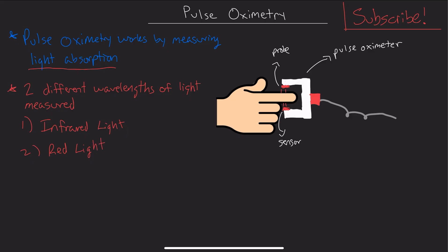Like I said, those probes will send infrared and red light through, and how this works is we know that hemoglobin carries oxygen in the blood.